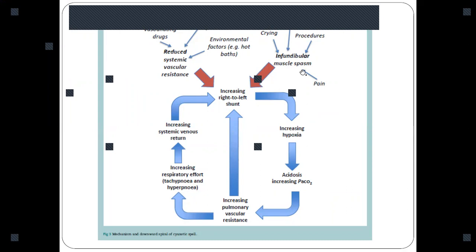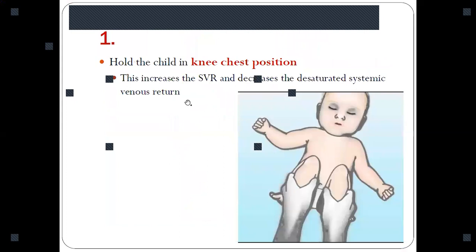Infundibular spasm leads to right ventricular outflow tract obstruction, and thus the blood cannot flow from the right ventricle into the pulmonary artery. Also, if there is anything which reduces the systemic vascular resistance, the pressure in the left ventricle will be much less, and thus there are more chances of shunt between right ventricle and left ventricle.